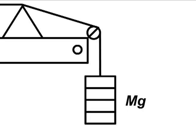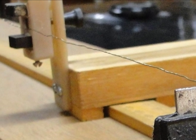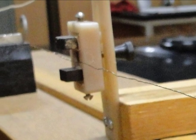Weights can be added to the holder to produce tension in the wire and a third movable bridge can be placed under it to change the length of the vibrating section of the string.